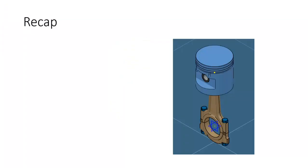To recap: we talked about how to pan — a simple press and hold of the mouse wheel button. The zoom feature requires pressing the mouse wheel down and holding it, then pressing and releasing the left mouse button. For rotate, you press down the mouse wheel, hold it, and then press and hold the left mouse button. We also covered how rotating from outside the part allows 2D planar rotation, while bringing the cursor in closer enables full 3D rotation.